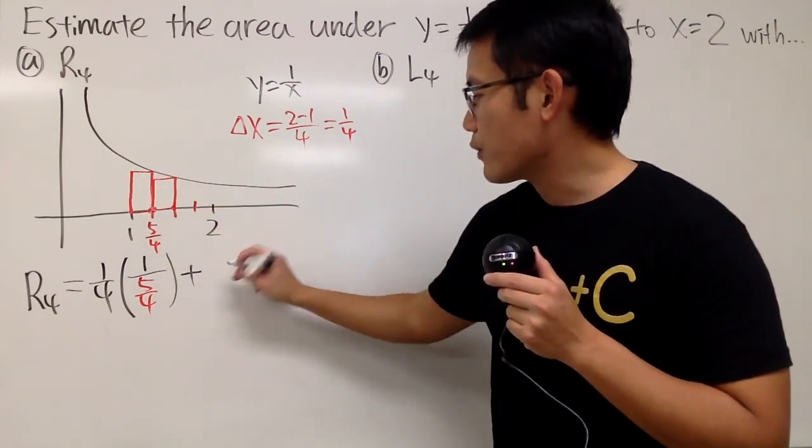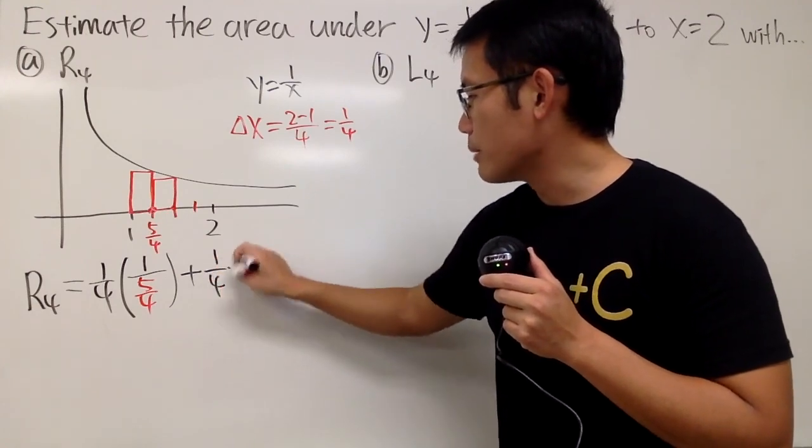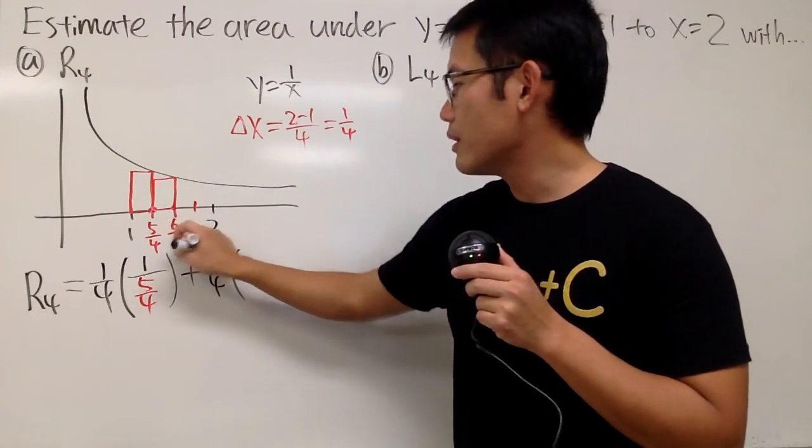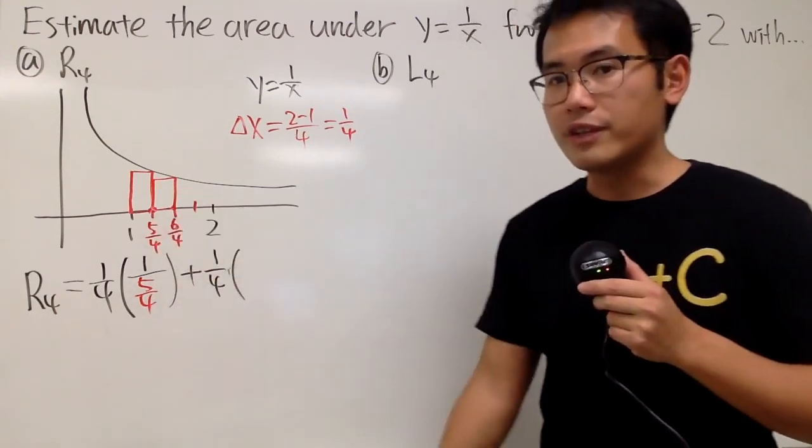And the width is, of course, still 1 over 4, and we multiply by the x value here, which is just 6 over 4. You go up by 1 over 4 each time. I know that's 3 halves, but it doesn't really matter.